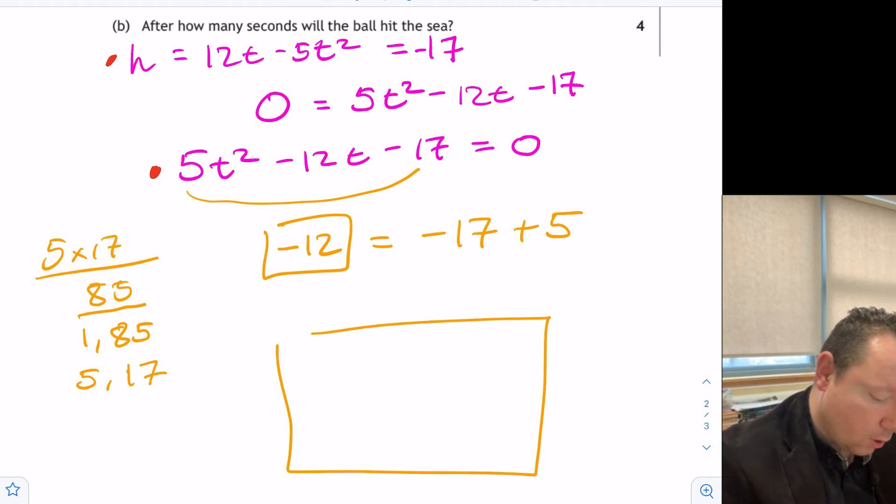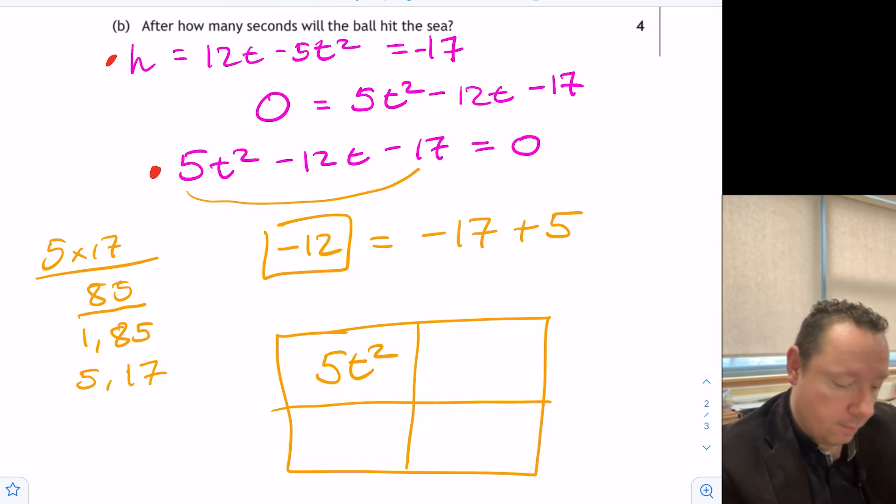So if we draw a box at this point, we have 5t² and then we're splitting up our middle term into -17t + 5t. That gives us my -12t, and then at the end I've still got my -17. So now we can just factorize each line and column. Factorizing 5t² and -17t, the only common factor is t. But going up and down, the common factor between 5t² and 5t is clearly 5t.